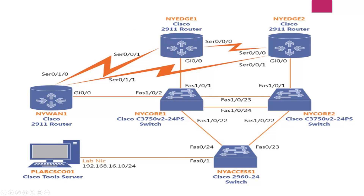You can see the topology here and we are going to work around this topology, focusing on different scenarios using the connectivity of routers, switches, and the diagram. We have a Cisco tool server connected to an access switch, and that access switch is connected to two core switches, which are then connected to routers.